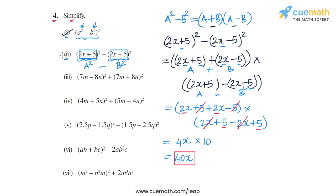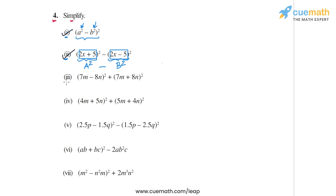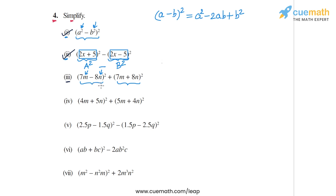This completes part 2. In part 3, we have (7m-8n)² + (7m+8n)². The first part is of the form (a-b)², which expands as a² - 2ab + b², and the second part is (a+b)², which expands as a² + 2ab + b², where a = 7m and b = 8n.